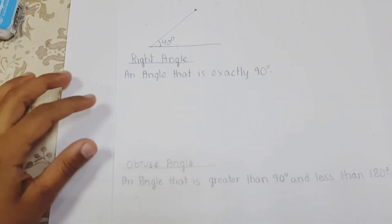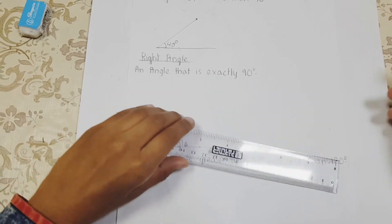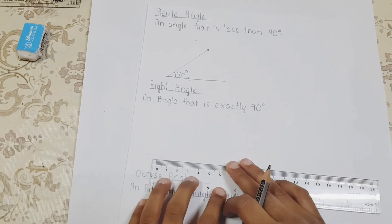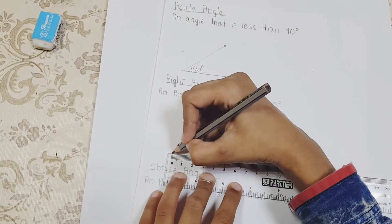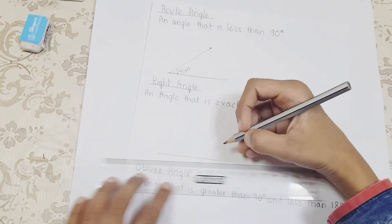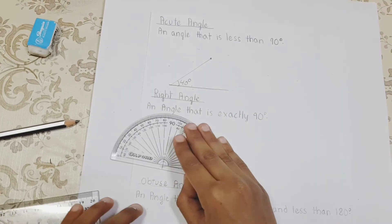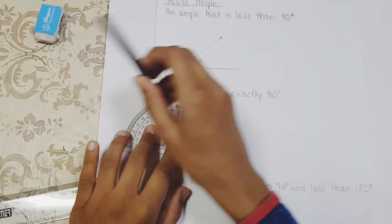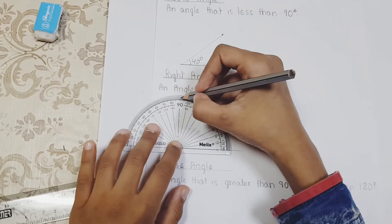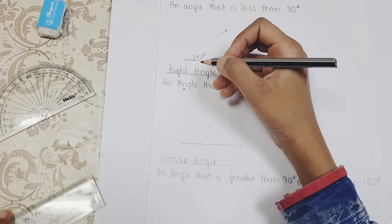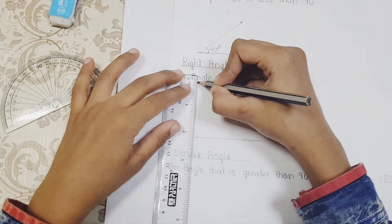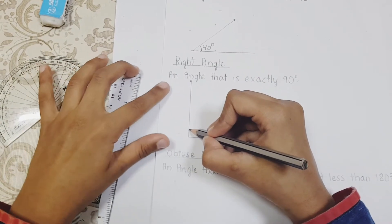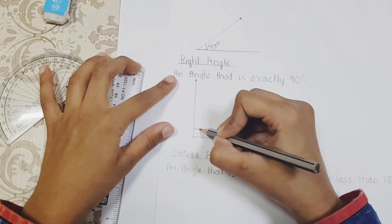Right angle: an angle that is exactly 90 degrees. Now I am going to tell you how to draw a right angle. To draw the right angle, you will need to draw a straight line. Keep the protractor on the left side and use inner degrees. As the right angle is 90 degrees, I am going to mark it at 90 degrees. Now I will join this point with the starting point of the line. And here instead of a little circle, you will need to draw a square.